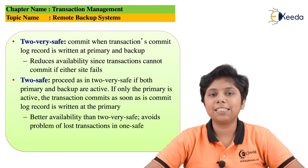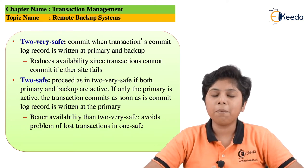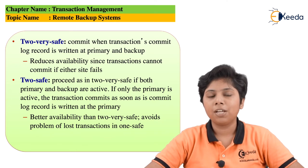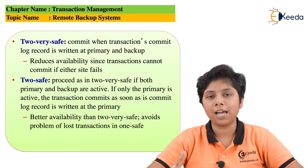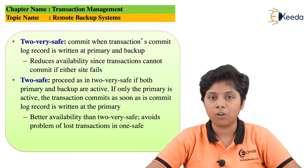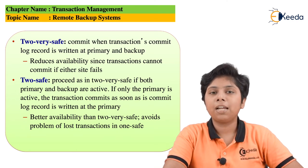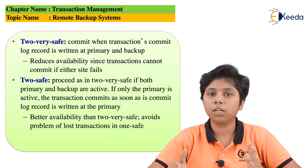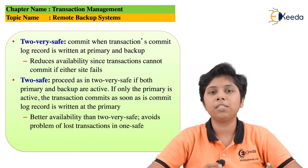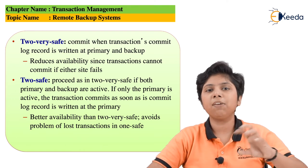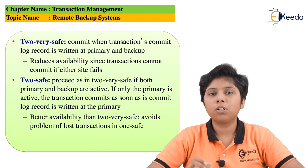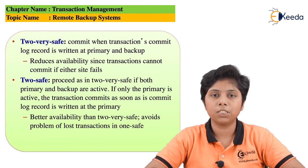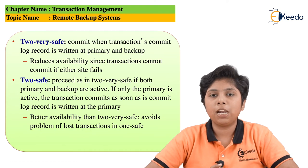The next variation for time to commit is two safe. Two safe is the same as two very safe if both the primary and secondary are active. But if only one of them is active, and either the primary or secondary has the updated log records, the transaction is considered committed. This reduces the time to commit significantly, because it avoids the strict dual-confirmation of two very safe while also avoiding the data loss risk of one safe where only the primary has the records but not the secondary.